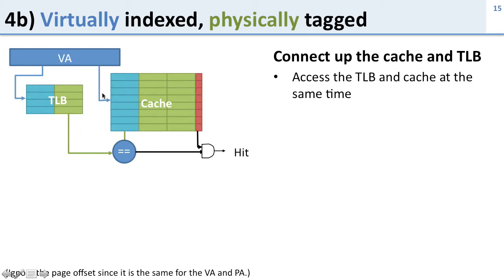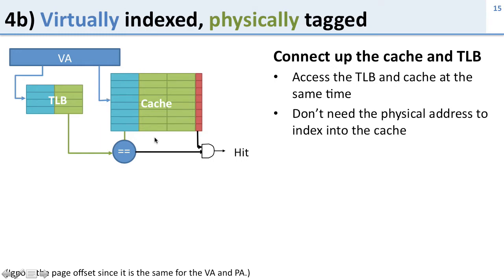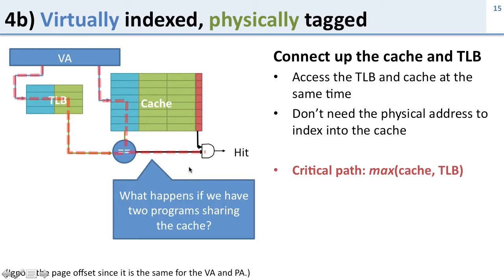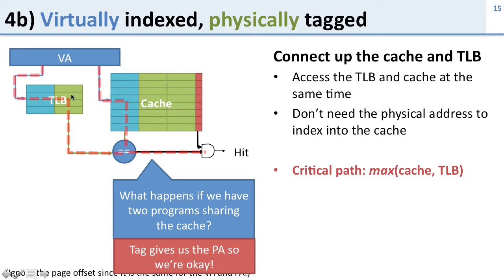The nice thing is we access the TLB and the cache at the same time — in parallel — so we don't have to wait for one before the other. We don't need the physical address to index the cache, which is great, but remember: because you can only use virtual address bits for the index, it limits the size of the cache. The critical path is the maximum of the TLB path and the cache path. If two programs both map virtual address 1000, the physical tag from the TLB tells us which program owns it — no problem running multiple programs.